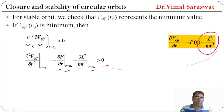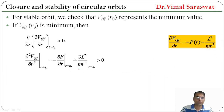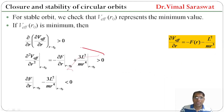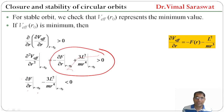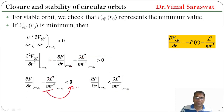Multiplying through by the negative sign gives: ∂F/∂r|_{r₀} − 3l²/(mr⁴)|_{r₀} < 0, or ∂F/∂r|_{r₀} < 3l²/(mr⁴)|_{r₀}. We transfer terms to obtain this stability condition.